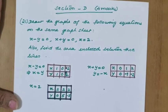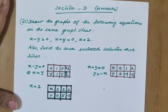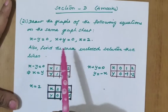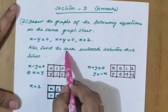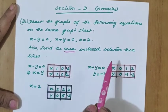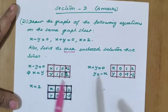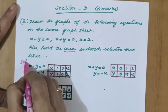We are doing practice paper 1, part 3. We have already completed sections A, B, and C. Now we are going to do section D, question number 21: draw the graphs of the following equations on the same graph sheet — x minus y equal to 0, x plus y equal to 0, x equal to 2 — and also find the area enclosed between these three lines.